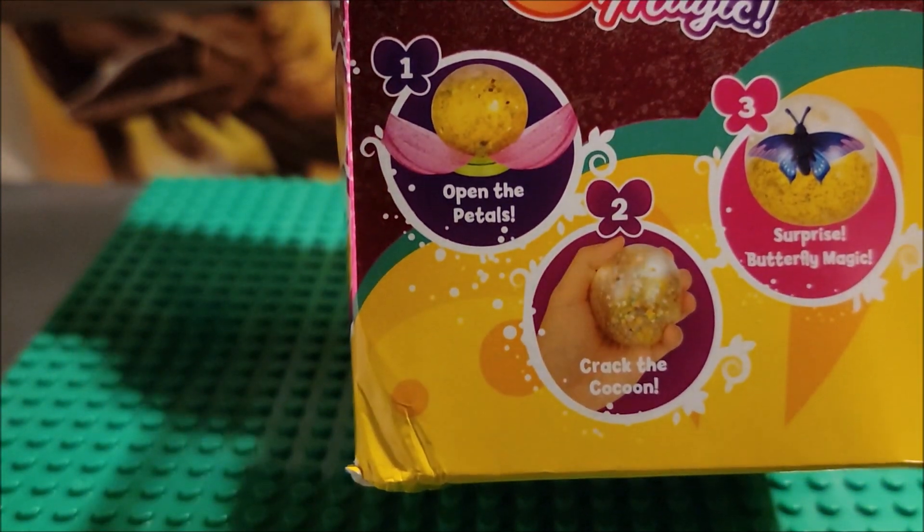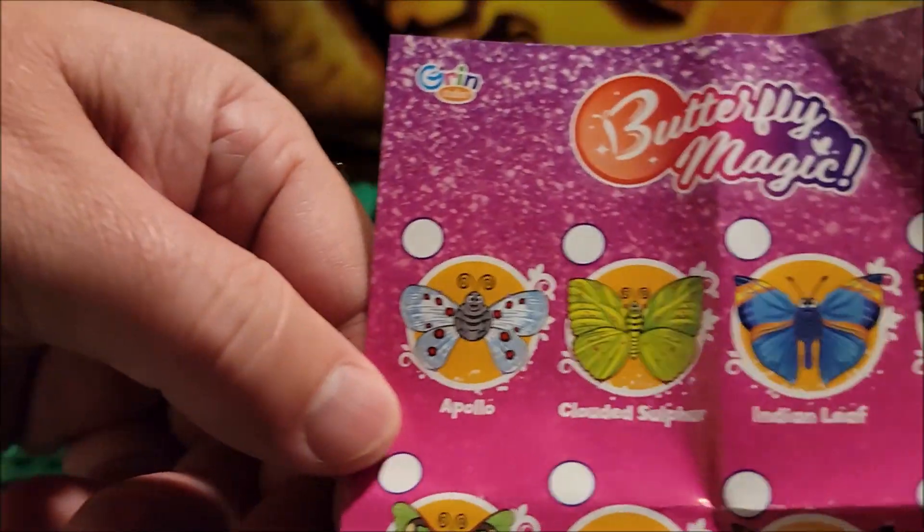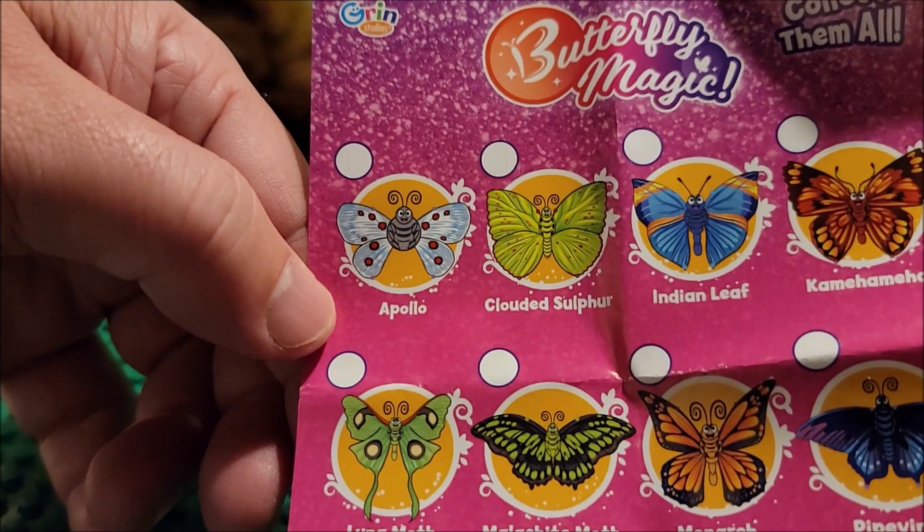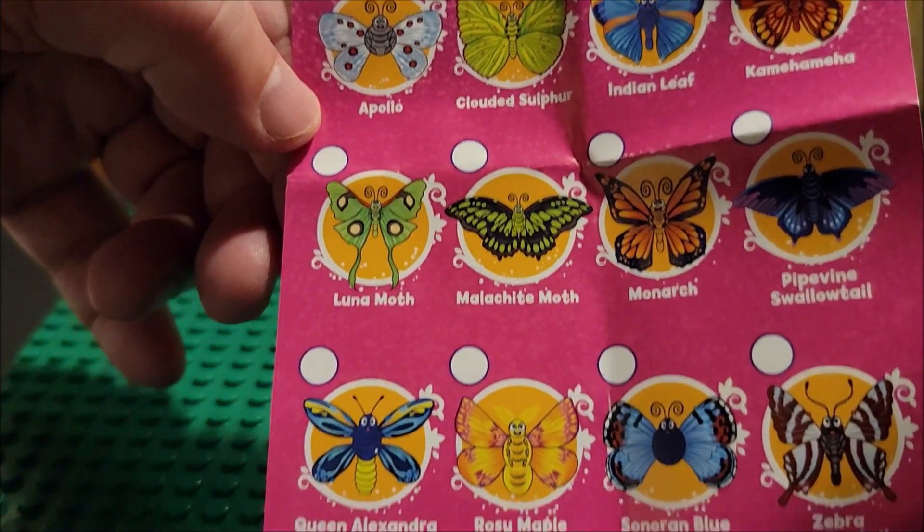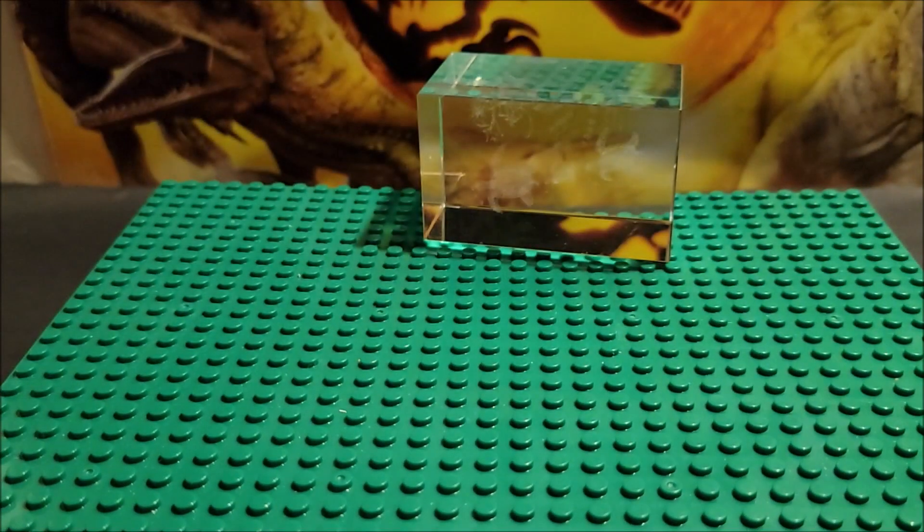And you can see here we are going to open one up and see what we get. So we're going to look at the paper first before I go a little crazy. Here are our options for butterflies. Collect them all.